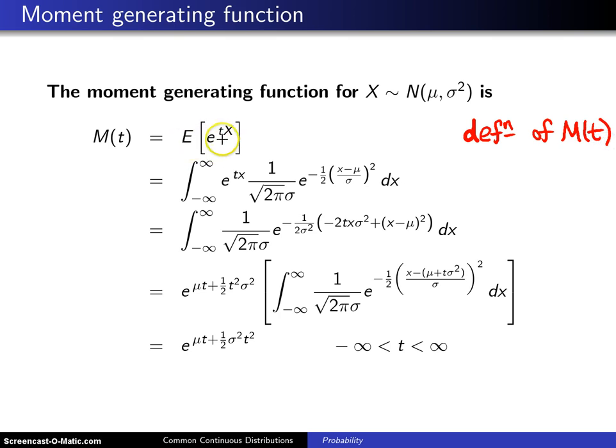To calculate this expected value, e to the tx power is brought in front, and that is multiplied by the probability density function for a normal random variable. This is set up using the definition of expected value.